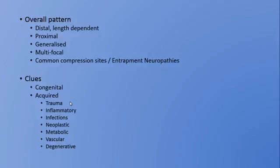Certain infections have got their own characteristics, for example Lyme disease. Neoplastic processes can affect nerves either directly — for example, from lung cancers invading into the brachial plexus — or sometimes it's an indirect peripheral neuropathy, such as paraneoplastic syndromes and the effects of treatments, particularly the platinum-based agents.